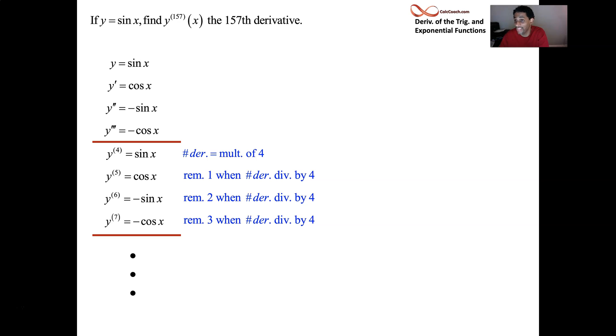Now, take 157 and divide by four, and you'll get a remainder of one. So you should be at the same place as y prime, the same place as the fifth derivative, the same place as the ninth derivative, because your remainder is equal to one. The 157th derivative of sine of x is just cosine x.